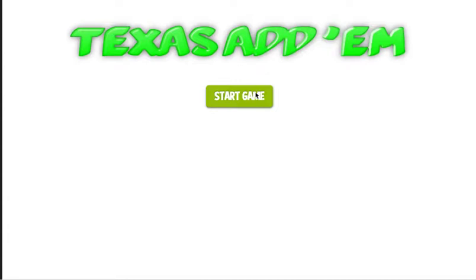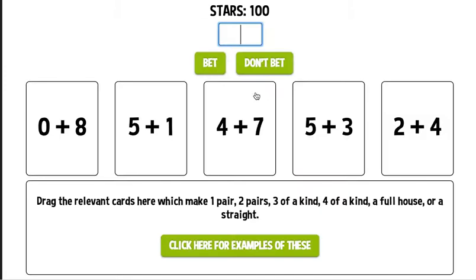So the first thing I do is click start game and you see here I have 100 stars to start. Now I'm going to bet some of my stars. I have to evaluate my hand to determine what a good bet is. If I click don't bet it'll give me all new cards but I will lose 10 stars.